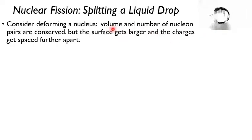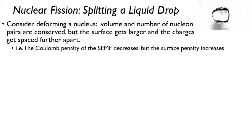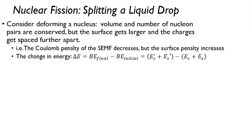So when you deform it, your volume doesn't change. Your number of nucleon pairs doesn't change. But your surface is going to get larger. So there's going to be a larger surface penalty. And your charges are going to be spaced further apart. So there's going to be less Coulomb repulsion, because it goes as one over the distance between the charges and you're spacing them further apart. So basically your Coulomb penalty is going to decrease, but the surface penalty is going to increase.